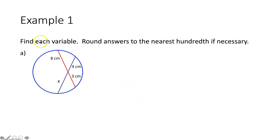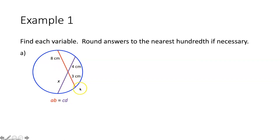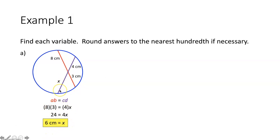Example time! Example one says find each variable. Round answers to the nearest hundredth if necessary. We have two chords that intersect inside of a circle, separating each other into two separate segments. Using the segments of chords theorem, 8 centimeters times 3 centimeters is going to equal 4 centimeters times X centimeters. So 8 times 3 gives me 24, and 4 times X is 4X. Divide both sides by 4, and X is equal to 6 centimeters.